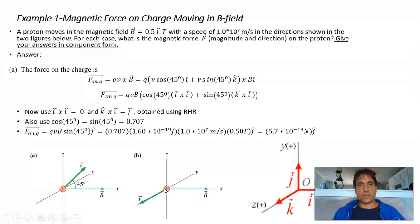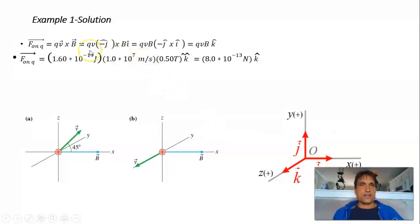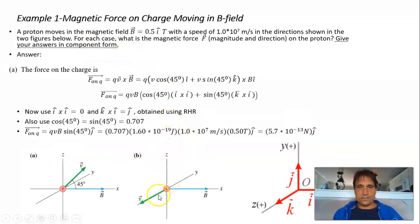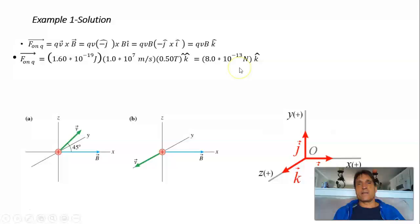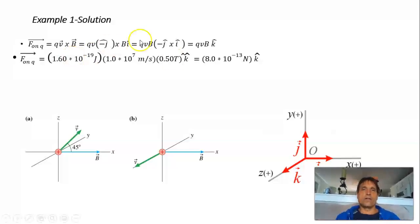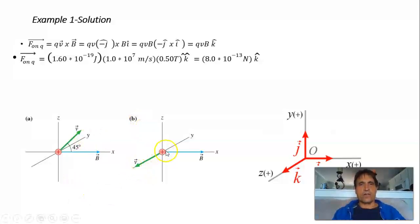In part b, this is a little easier — the velocity only has one component. We apply the same formula. Now v is in the negative y direction, so we write q times v times (-ĵ) cross B in the î direction. Negative ĵ cross î equals k̂, and we plug in to get 8.0 × 10⁻¹³ newtons in the plus z direction upward. As a check: point your fingers in the direction of v with your palm toward B, and you will see the force points along the plus z direction — confirming our answer.